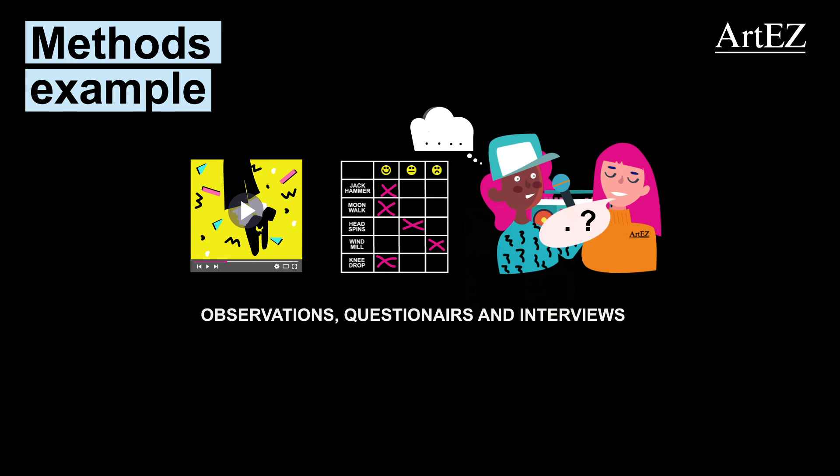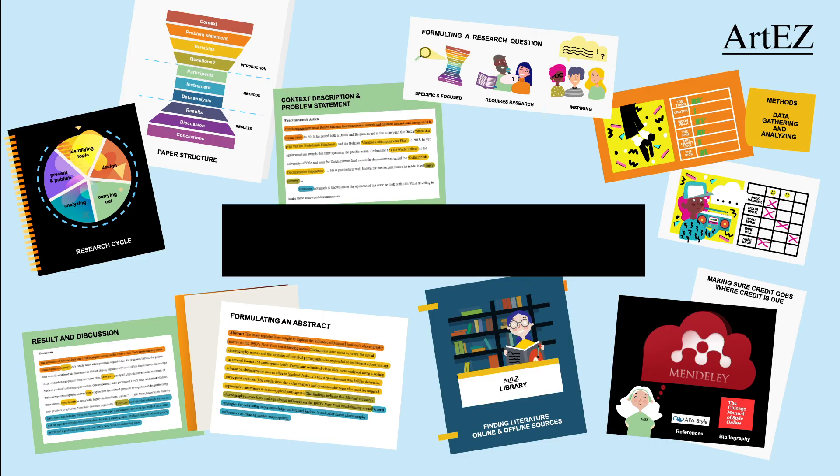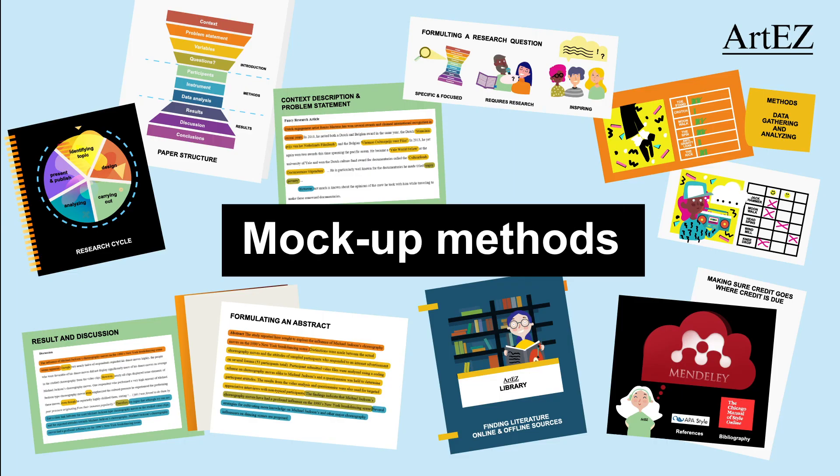In the results section, you write down the actual results you found. For more help, don't forget to visit your local RTES library. In this animation, we discussed a mock-up method section with very high Michael Jackson levels. For more information on literacy skills, also check out the other animations that we've prepared for you. Thank you.